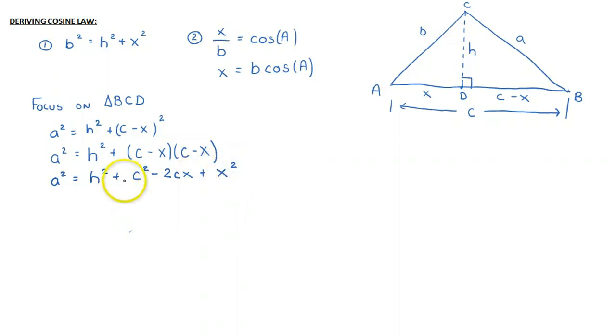And now I'm going to take a second and rearrange this. I'm going to rewrite it in this form. I'm going to take the X squared and bring it around to the front. So X squared plus H squared plus C squared minus 2CX.